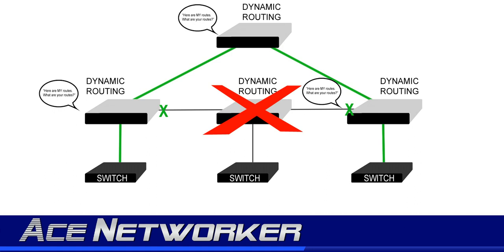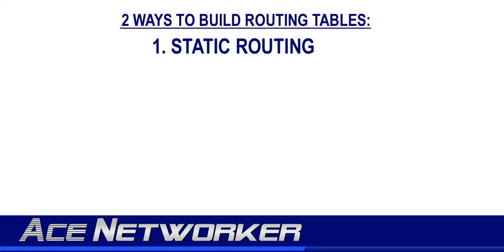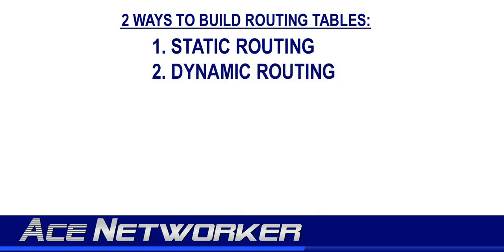So the first method was static routing — a human actually programs or configures the routes into the routing table on each router, requiring that human to know their network really well. The second method is dynamic routing, whereby the routers communicate with each other using dynamic routing protocols, and they learn the routes to enter into their own routing tables, as well as make changes to their routing tables automatically based on any physical changes detected on the network, like a router losing connectivity or going down.